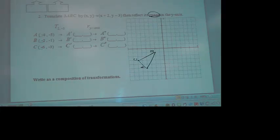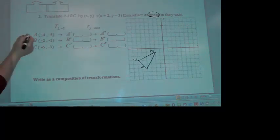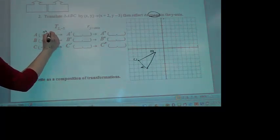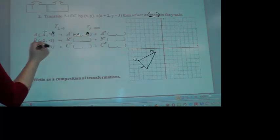So we're going to translate 2, negative 3 first. All right, so what'd you get for your A prime? Negative 2, negative 8. So you're adding 2 here and taking away 3 here. Negative 2, negative 8. Love it.